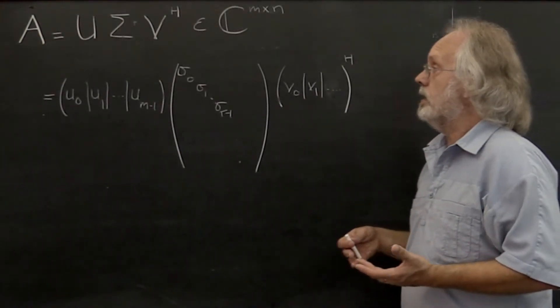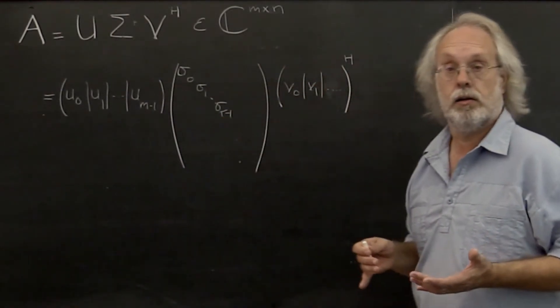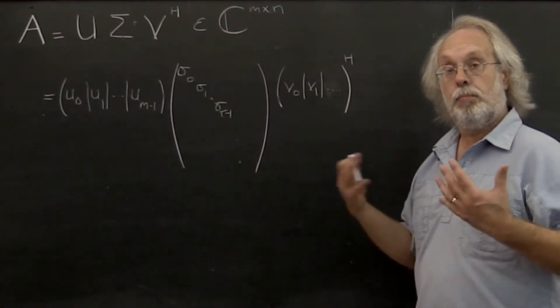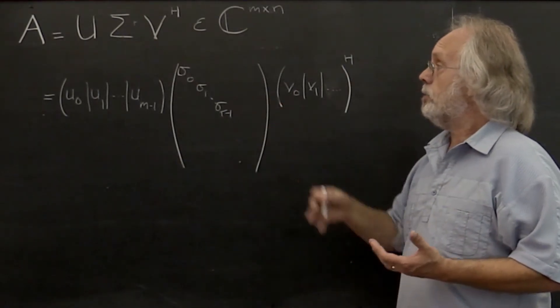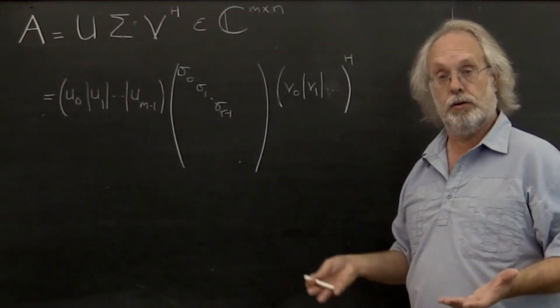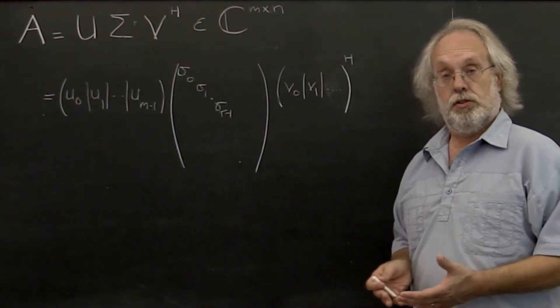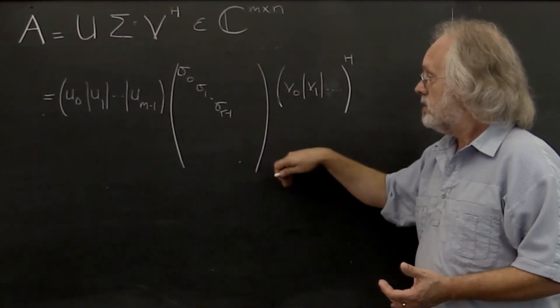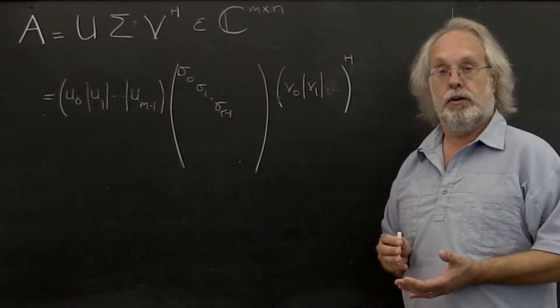Or it may be the case that you're given a matrix A that has exact rank R. But in implementing the algorithm that computes the singular value decomposition, due to round-off error encountered along the way, a little bit of noise is introduced. And again, typically none of these diagonal elements are equal to zero.